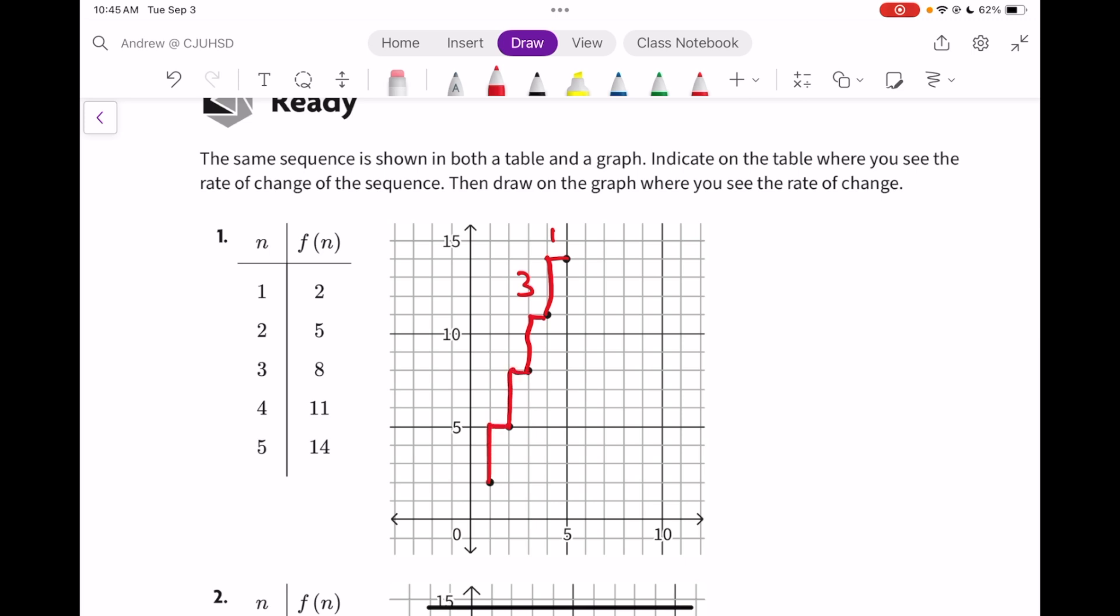Slope is the change of Y divided by the change of X. In the table, as we go from point to point or number to number, we're going up 3. And in the N or X column, up 1. And there's our slope. Our slope is 3 to 1 or just 3.